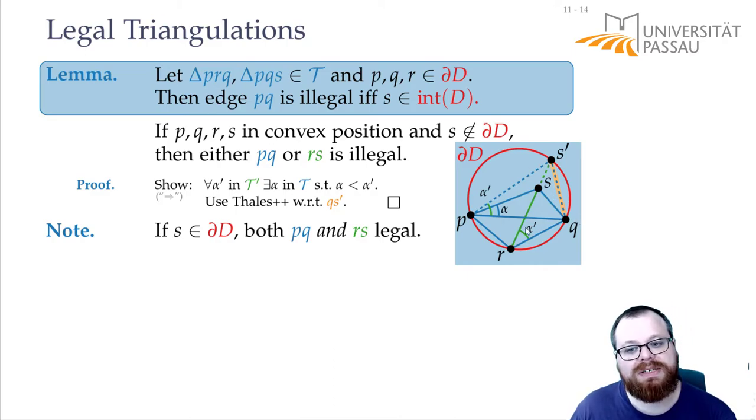It can happen that we have four points on the same circle, and then, however we flip the edge inside, we always have a legal triangulation.